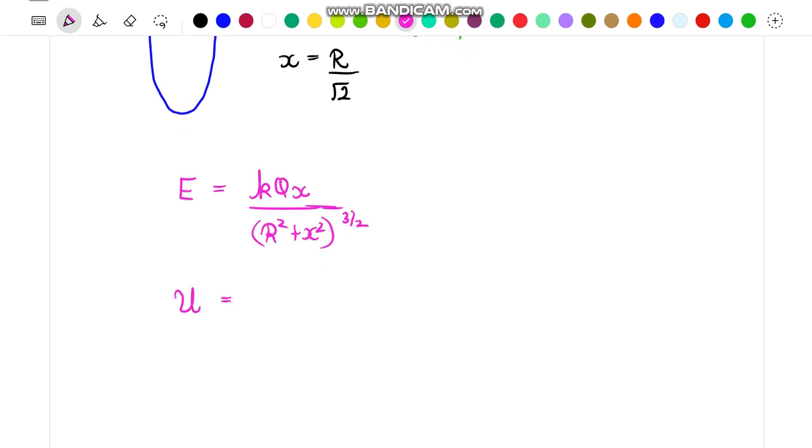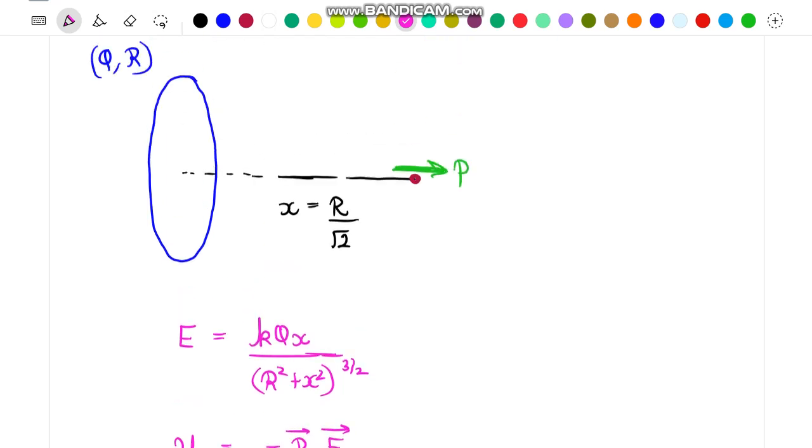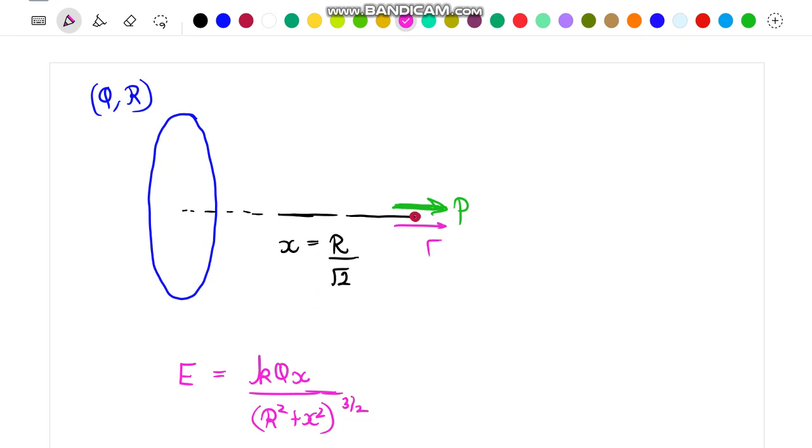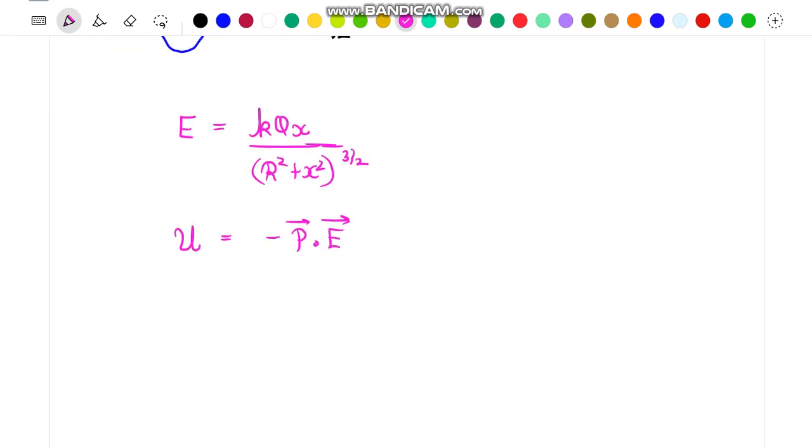Further we know that potential energy of the dipole is written as minus p dot e. Since field and dipole moment are both along the same direction we can directly write this value will be equal to minus p into e, that is minus p q x whole upon pi square plus x square to the power of 3 by 2.